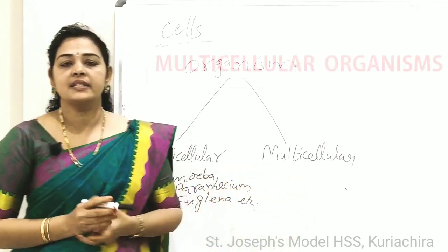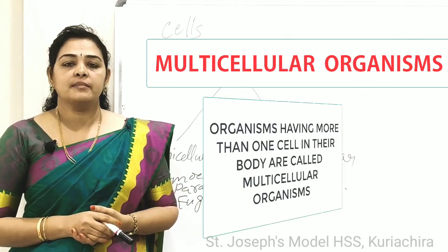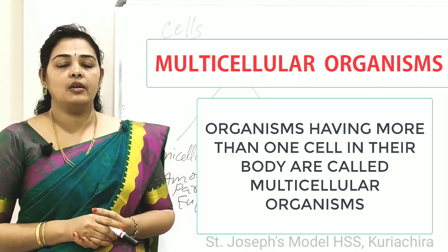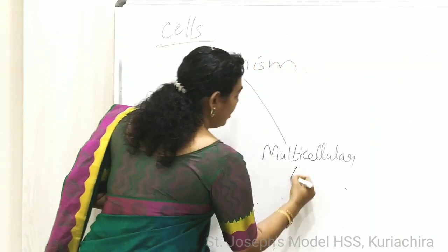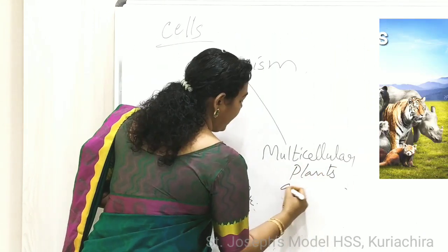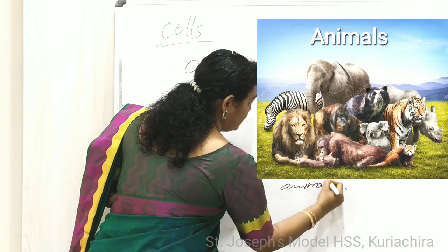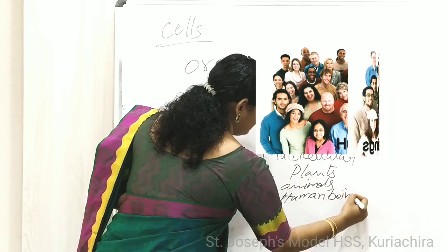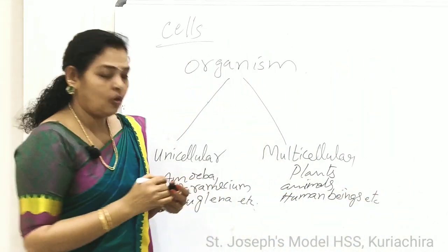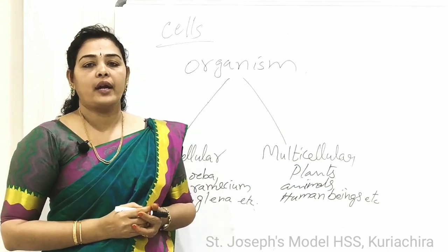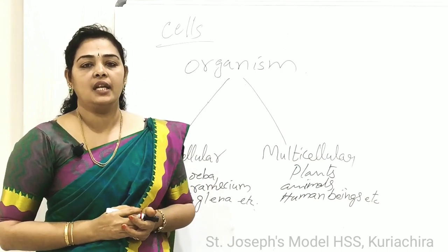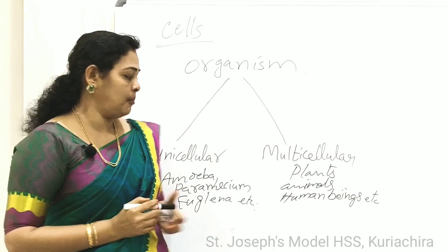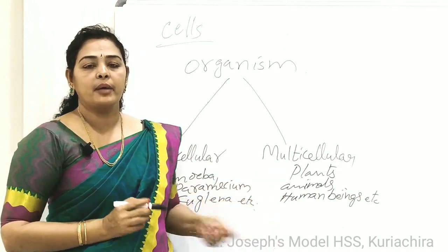Next we talk about multicellular organisms. Organisms having more than one cell in their body are called multicellular organisms. Examples: plants, animals, human beings, etc.